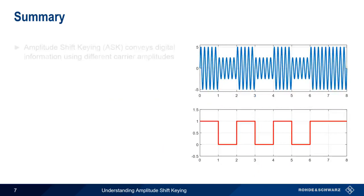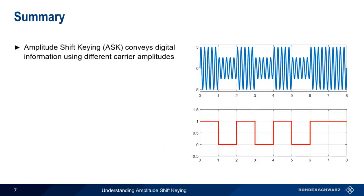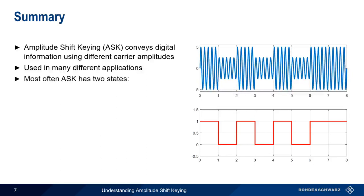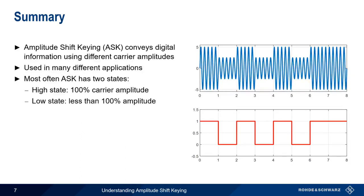So in summary, amplitude shift keying conveys digital information by changing the amplitude of the carrier in discrete steps. ASK is used in numerous applications, including Morse code, many types of wireless remotes, and NFC, or near-field communications. In almost all cases, ASK systems have two states: a high state that corresponds to 100% carrier amplitude, and a low state that is less than 100% amplitude.